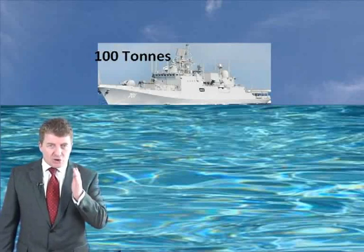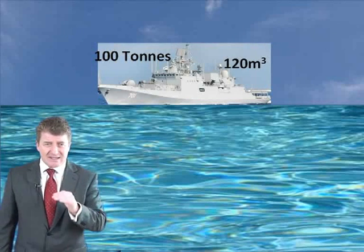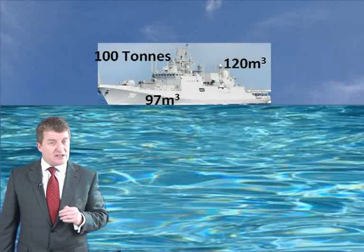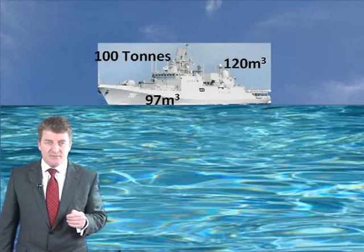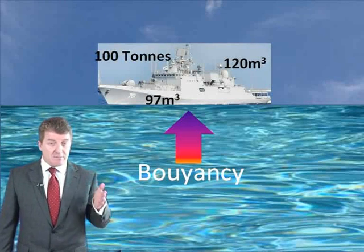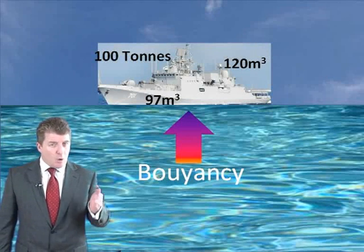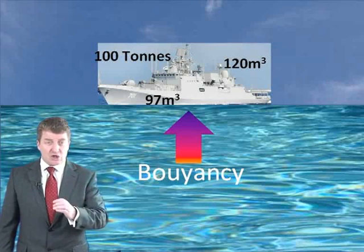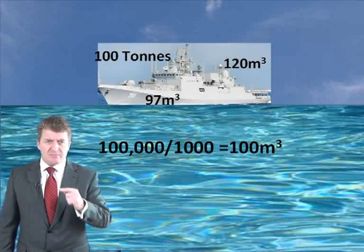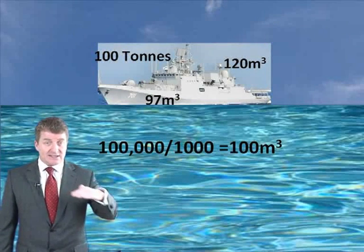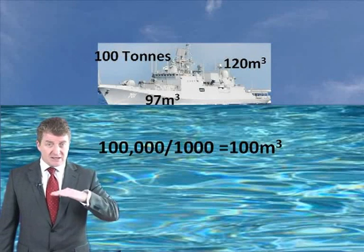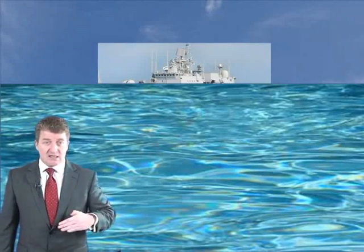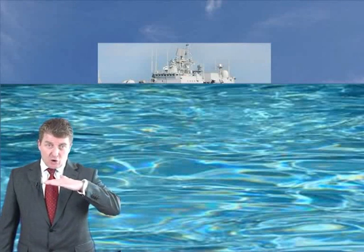Let's do an example. A ship weighs 100 tonnes and has a total volume of 120 meters cubed, with a volume of 97 meters cubed to the ship's deck. We need to determine whether the ship will sink below the deck. The ship weighs 100 tonnes, and this force will be balanced by the force of buoyancy. The density of water is 1000 kilograms per meter cubed, and since one tonne is 1000 kilograms, the ship will displace 100 meters cubed of water. The volume to the deck is only 97 cubic meters, but 100 cubic meters must be displaced, so the water level would go above the deck and the ship would sink.